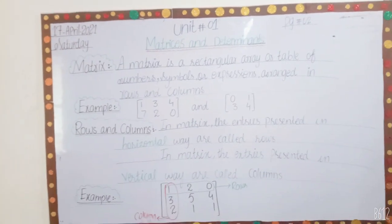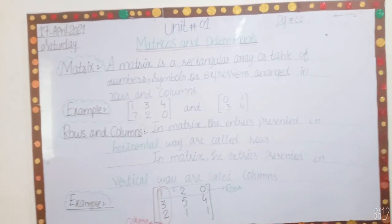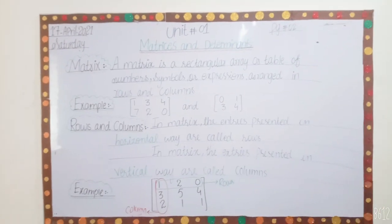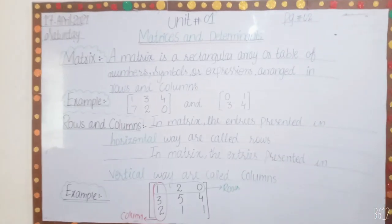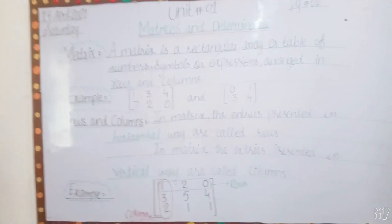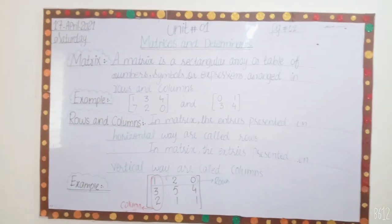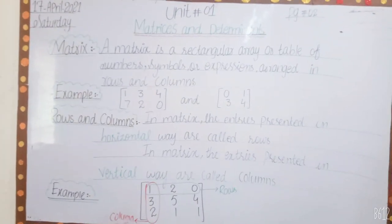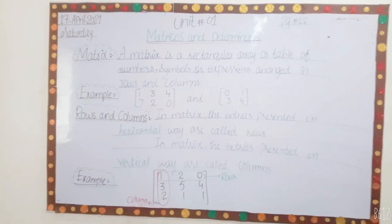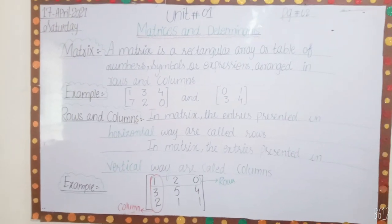We start our definition. First definition is matrix. A matrix is a rectangular array or table of numbers, symbols, or expressions arranged in rows and columns.